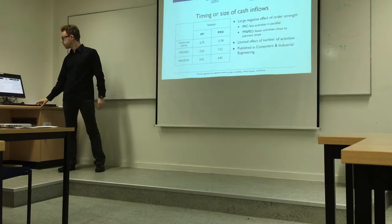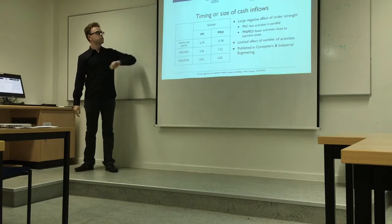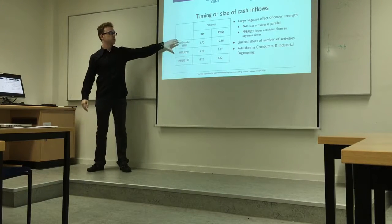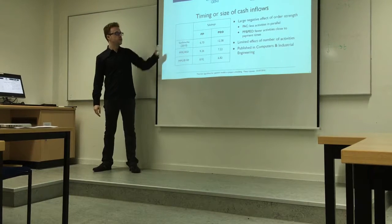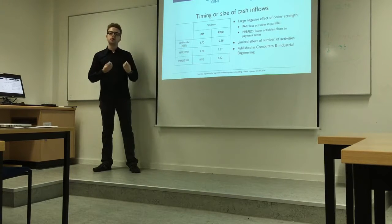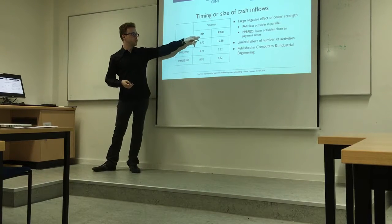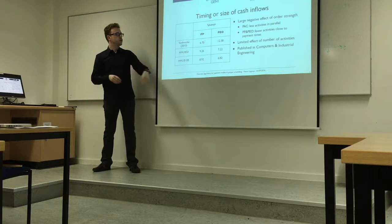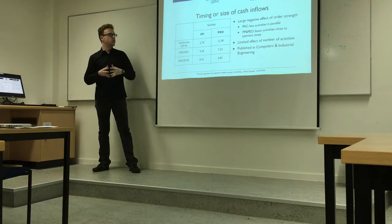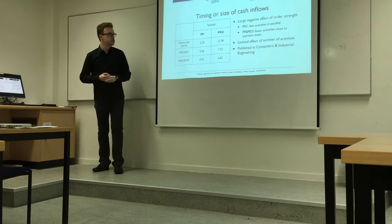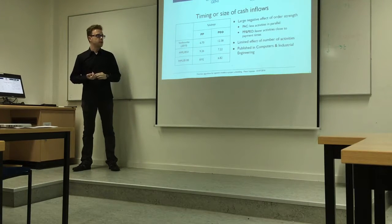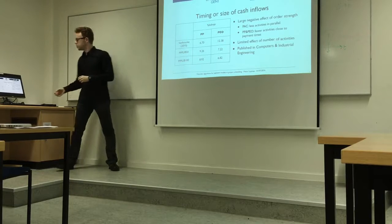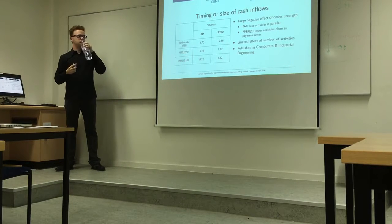For results, I tested on three datasets from literature. The table shows the percentage average improvement from applying the activity move rules compared to not applying them, for both progress payments with regular intervals and payment-at-event-occurrences with irregular intervals. An important finding from this chapter is that order strength has a profoundly negative effect on net present value.